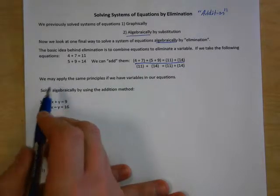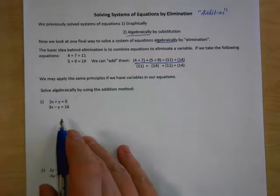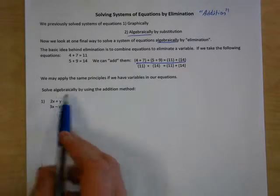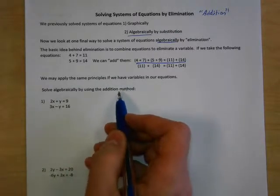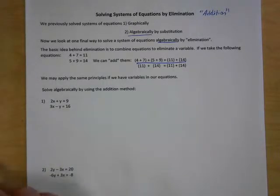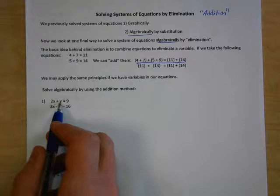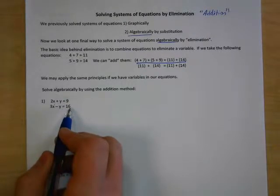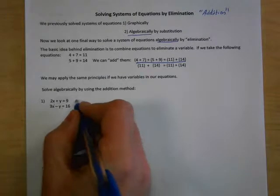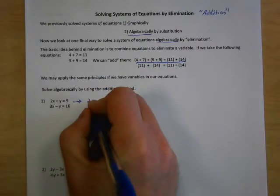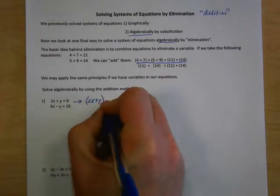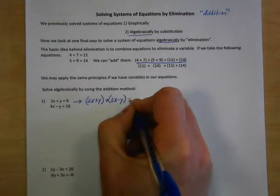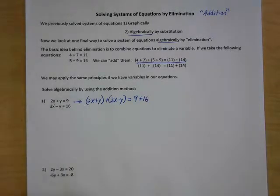The same principles apply if we have variables in our equations. We're going to solve algebraically using the addition or elimination method. We have a left side of 2x plus y and a left side of 3x minus y, with right sides of 9 and 16. If we add the left-hand sides — 2x plus y plus 3x minus y — that equals the sum of the right-hand sides, 9 plus 16.